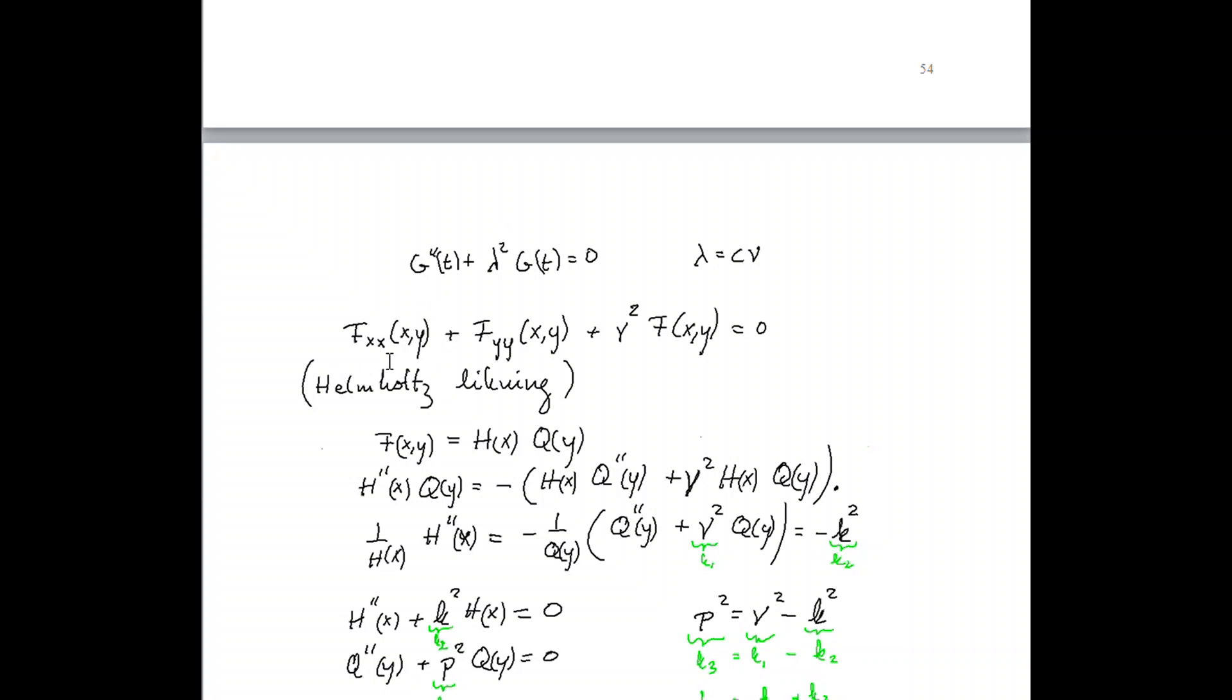This equation is called the Helmholtz equation. In order to solve this Helmholtz equation, we just use a method of separation of variables once more. We split this function F of X, Y into a pure function of X multiplied with a pure function of Y.